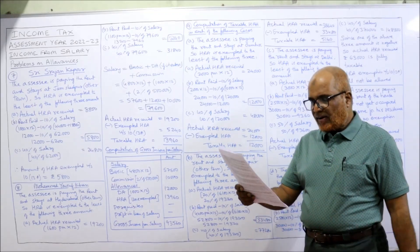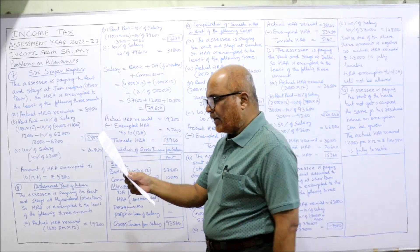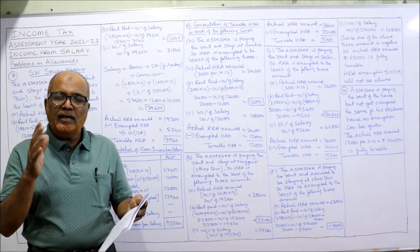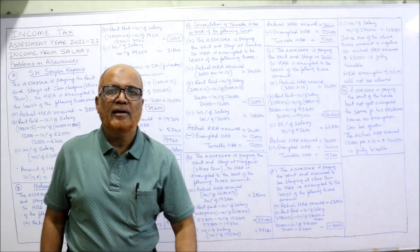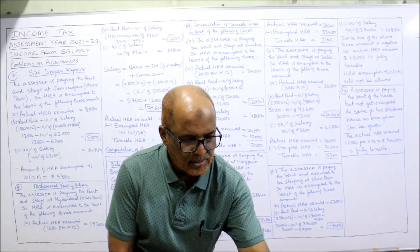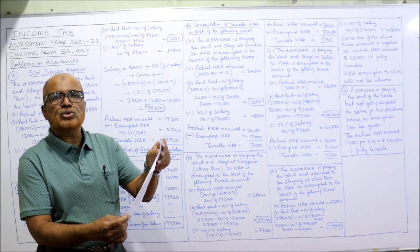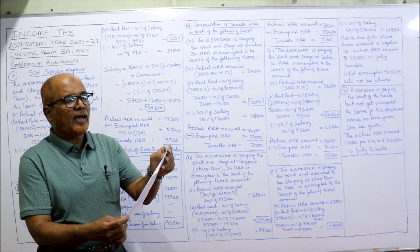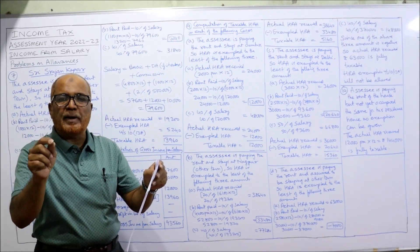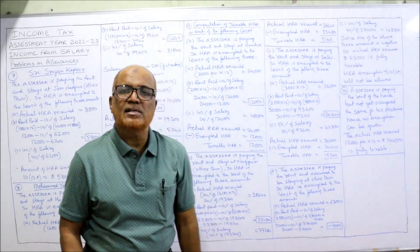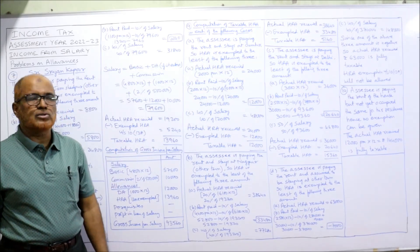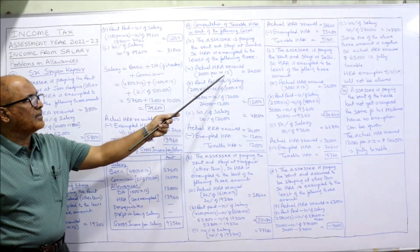Problem 9: Find out the amount of HRA to be included in salary income in each of the following cases — A, B, C, D. We need to find taxable HRA in each case. Case A: Basic student allowance Rs 2,000 per month, entertainment allowance Rs 3,000 per annum, dearness allowance 15% of basic. Actual rent paid Rs 2,000 per month in Guntur. The employee is paying rent and stays at Guntur — other town. HRA is exempted to the least of three amounts. Actual HRA received: Rs 2,000 × 12 = Rs 24,000.